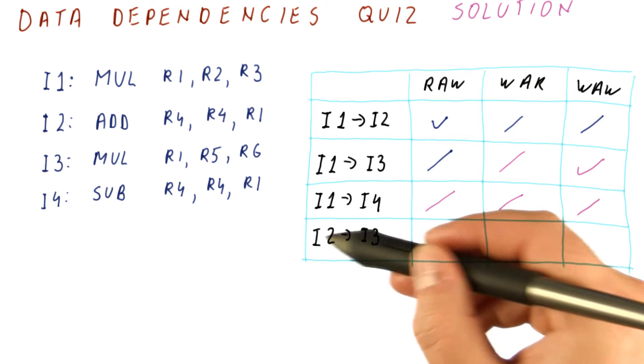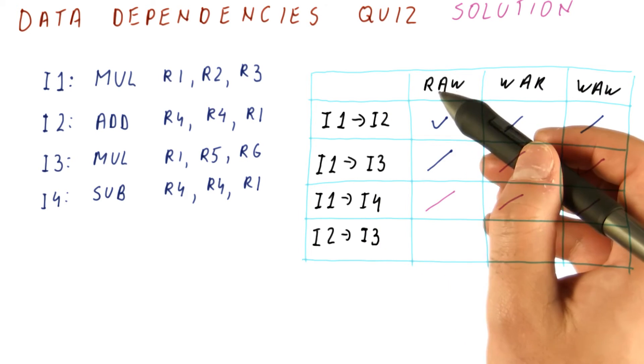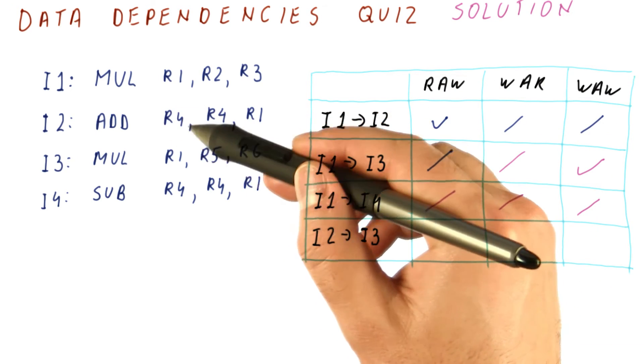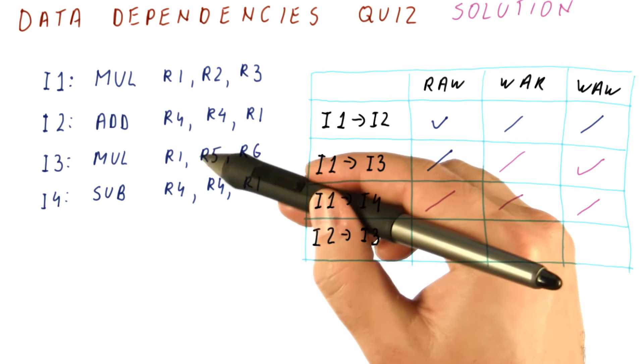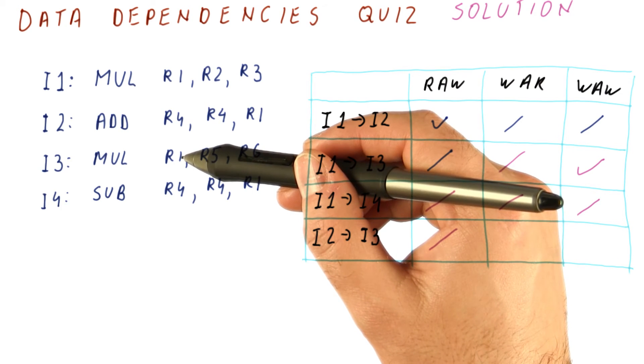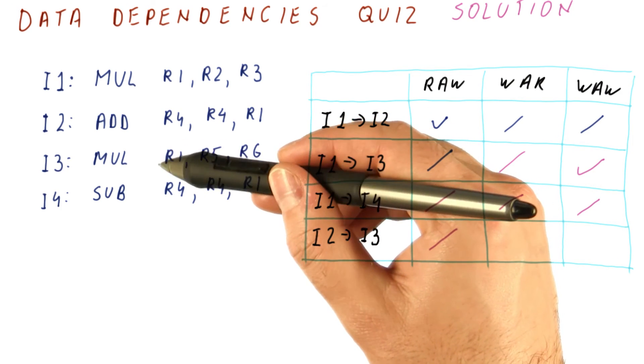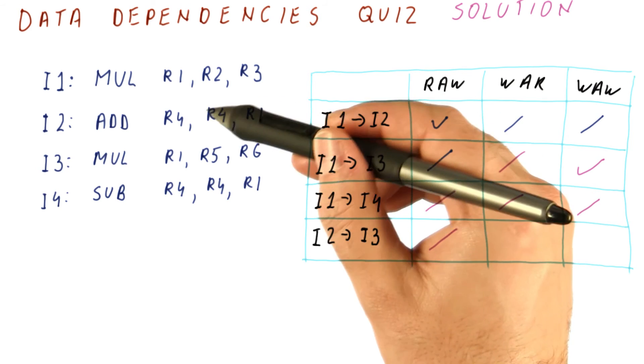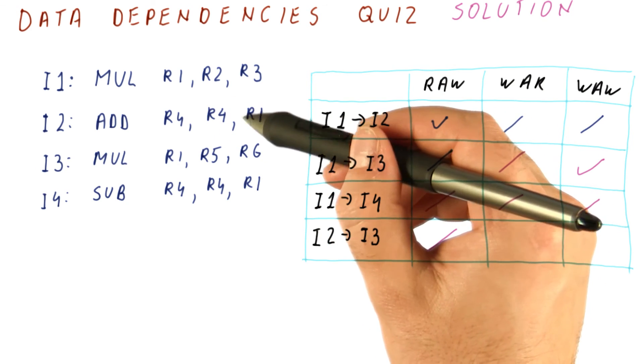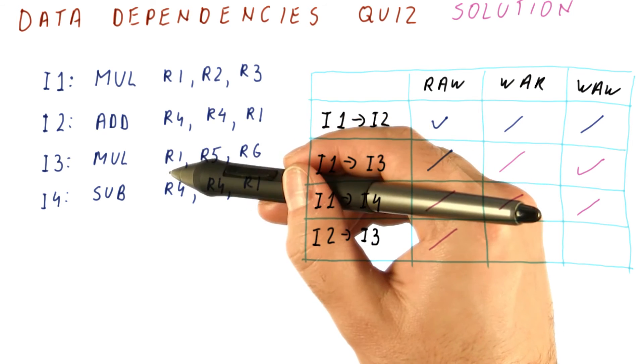Finally, let us look at I2 to I3. Is there a read after write dependence? Is I2 producing a register that is read by I3? No, it is not. Write after read would mean that I3 is overwriting a register that I2 needed to read, and that is true, because I2 needs to read R1 before I3 overwrites it.